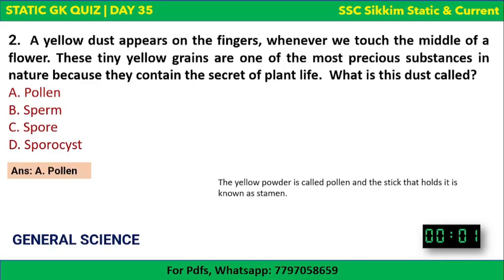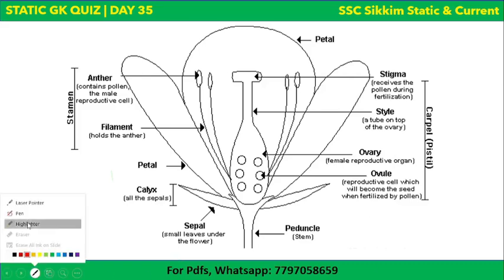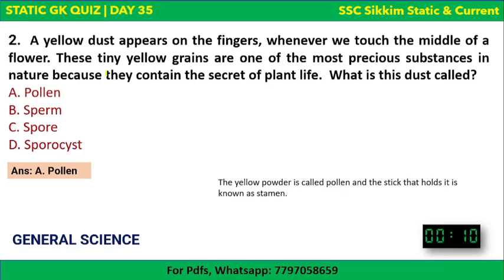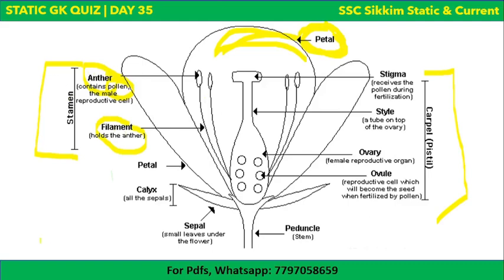The yellow powder is called pollen, and the stick that holds it is known as the stamen — the male reproductive part of the flower. The colorful parts are petals. The male reproductive part as a whole is the stamen; the female reproductive part is the carpel. Stamen has two parts: anther and filament, and the anther contains pollen. The carpel or pistil has three parts: stigma, style, and ovary.